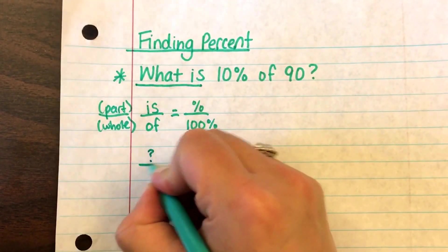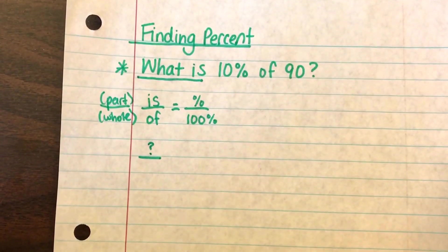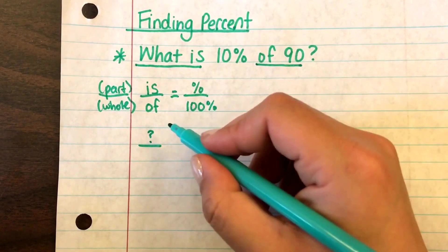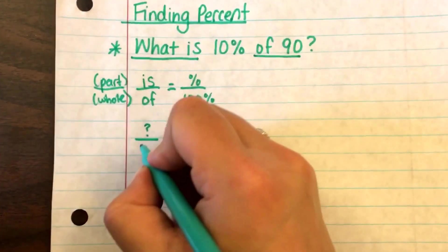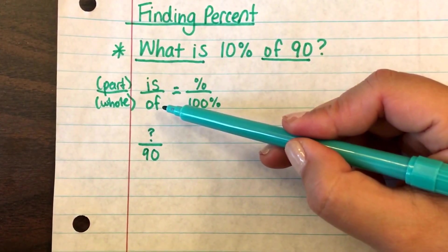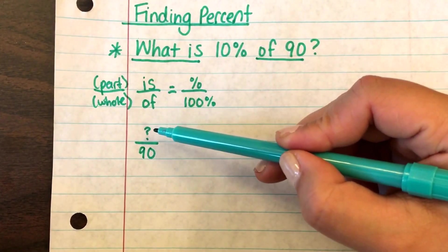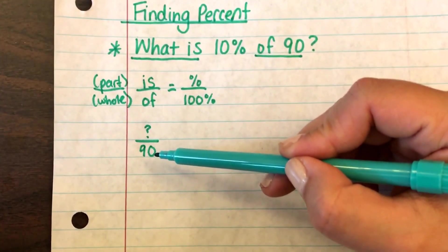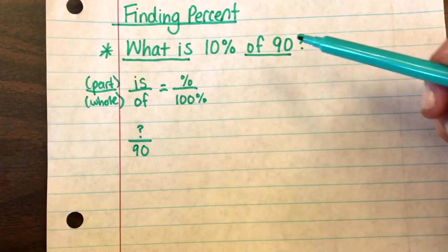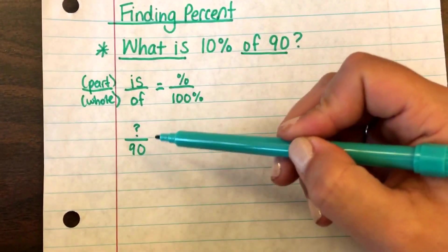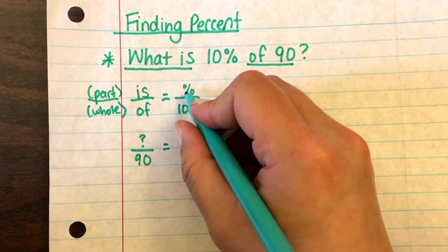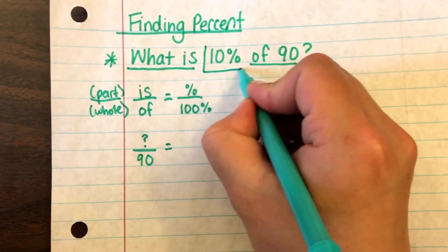It says 'what is,' meaning we don't know what it is, so the question mark goes on the top for 'is.' It also says 'of 90,' so it tells us that 'of' stands for 90, meaning 90 will go in the 'of' spot or in the denominator. So 'is over of' is the same as question mark over 90.